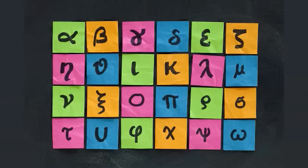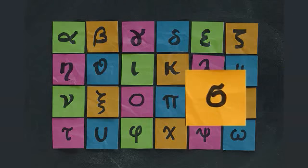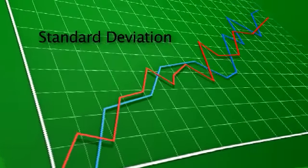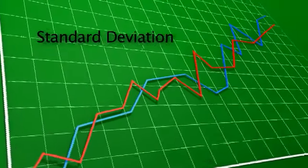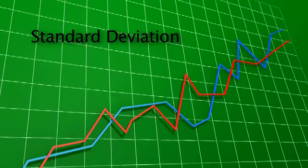Before we get into DMAIC, let's take a minute to define what the heck is meant by the term Six Sigma. Well, in reality it's the 18th letter of the Greek alphabet, and in statistics, sigma represents a standard deviation — the amount of variation in a process.